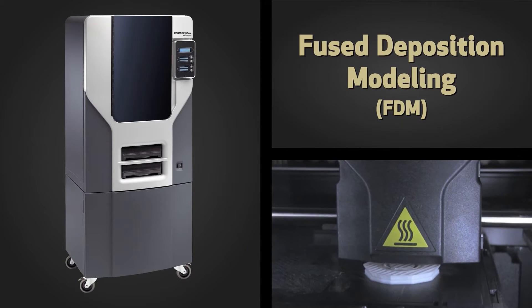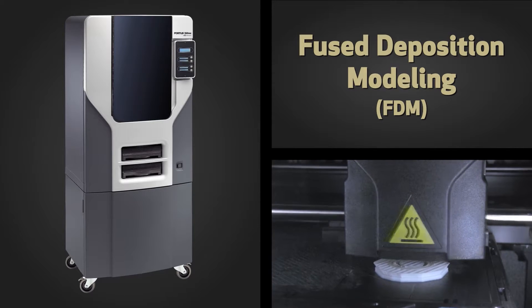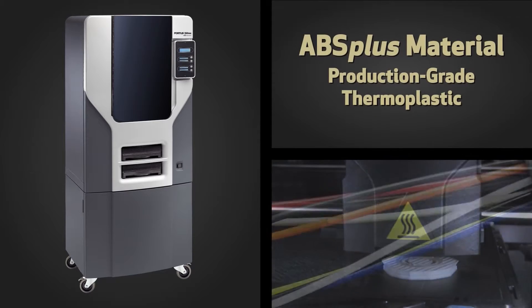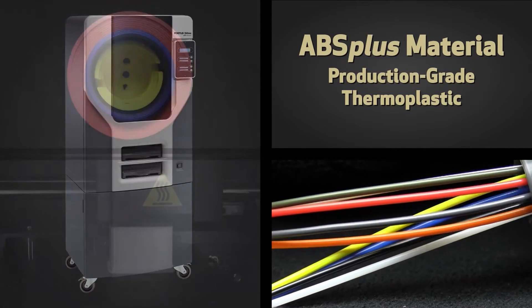In choosing a prototype machine, we like the FDM technology. With the ABS material, it is a very good material as far as durability and allows us to really check for fit, form, and function.